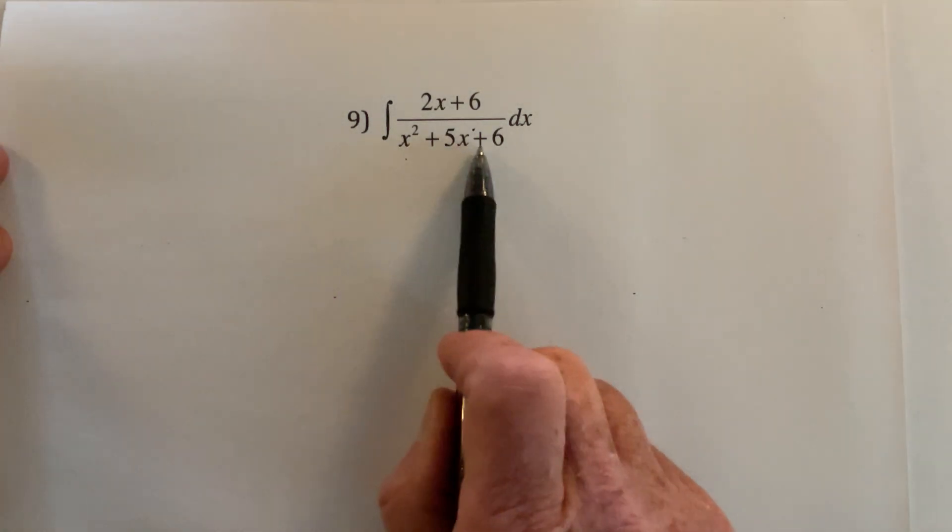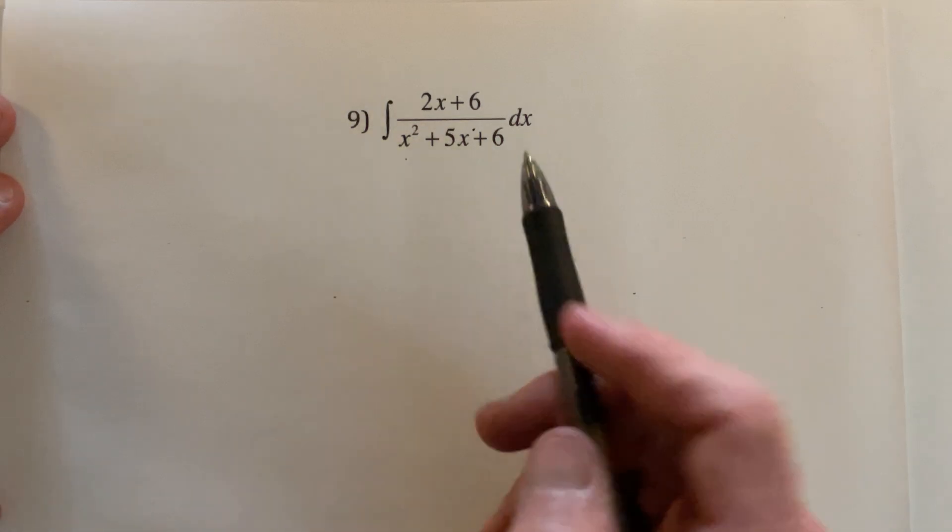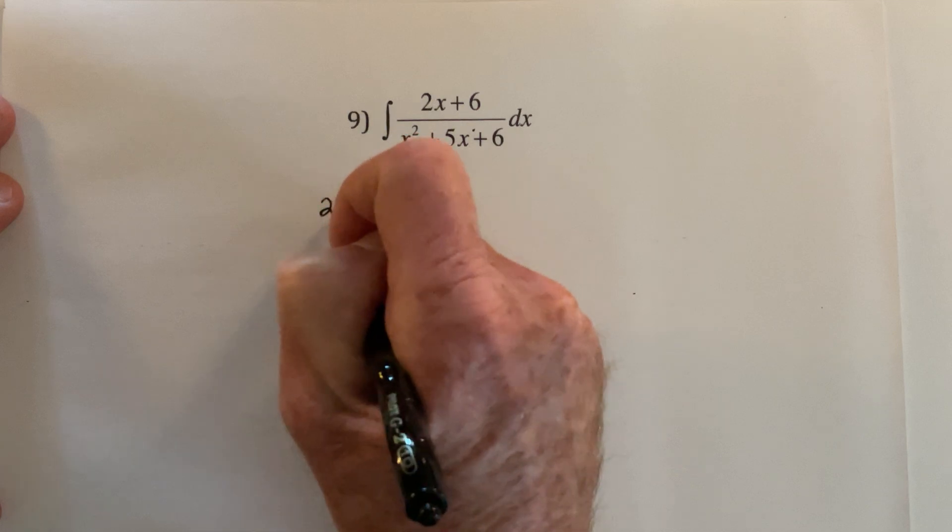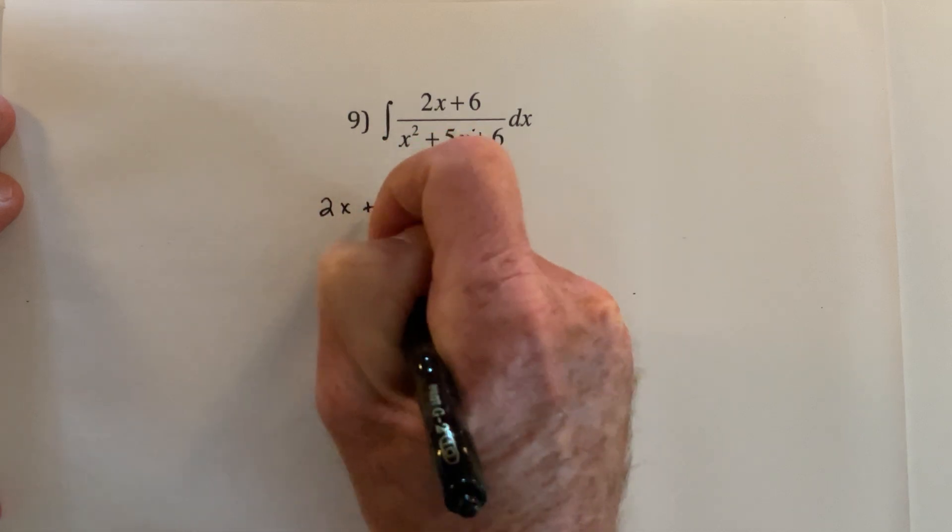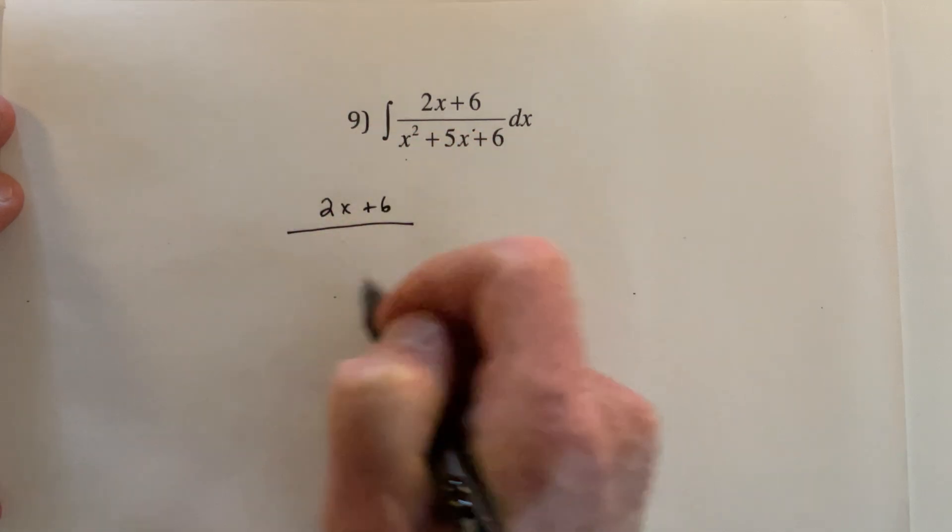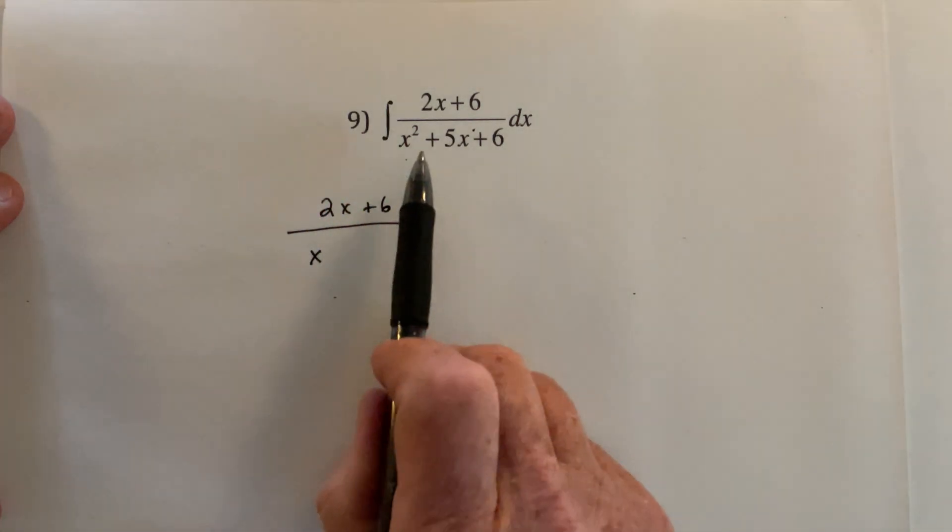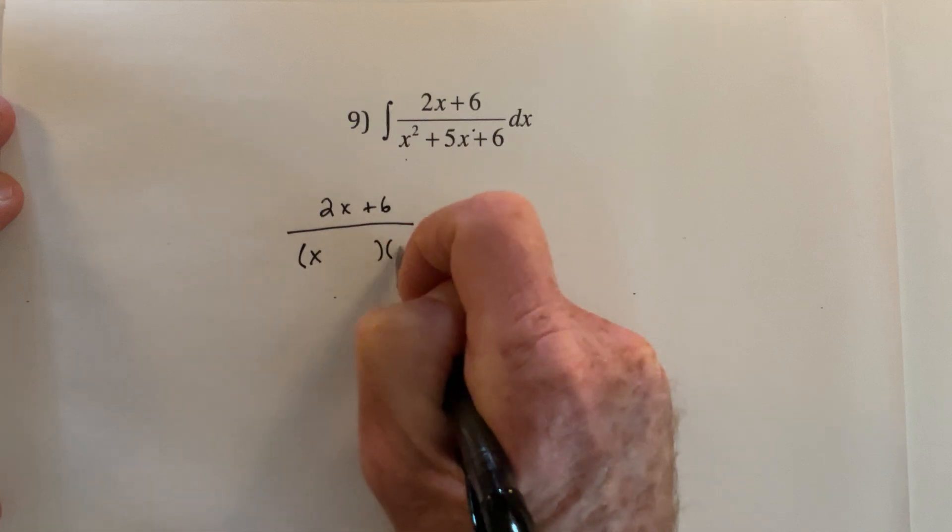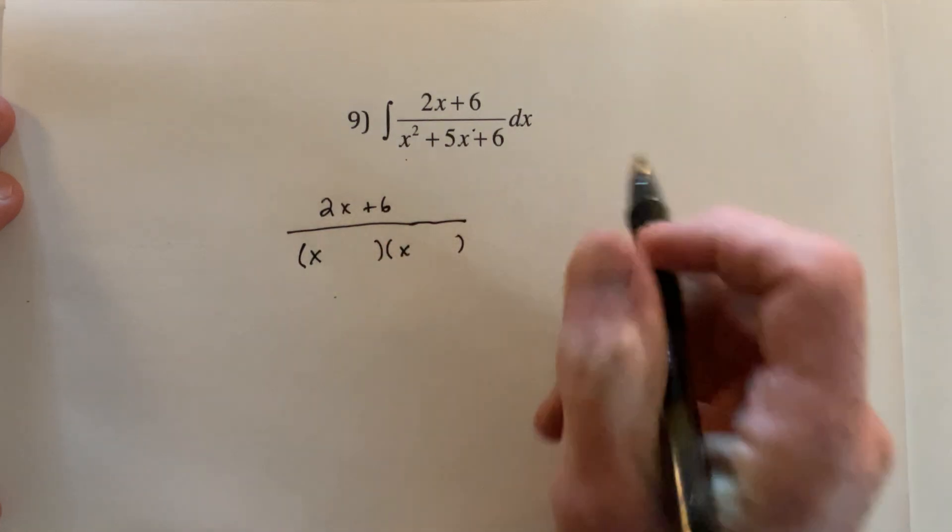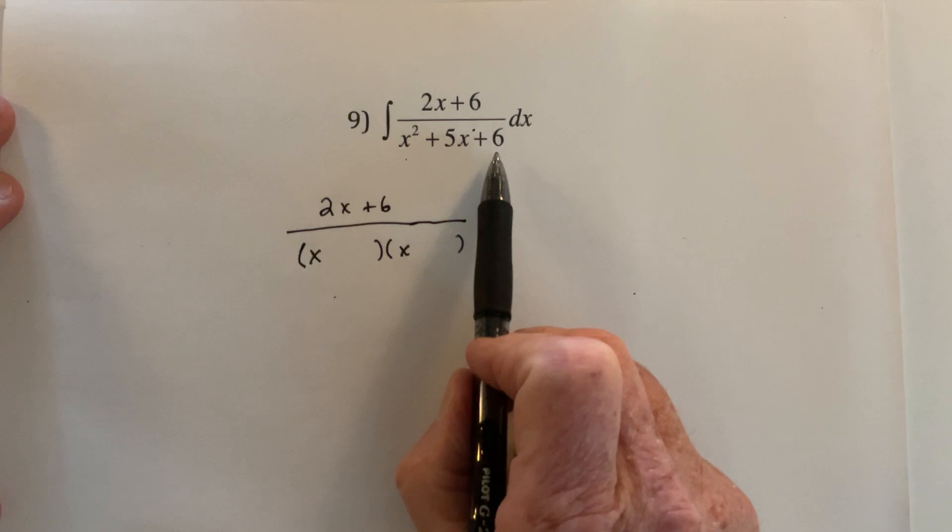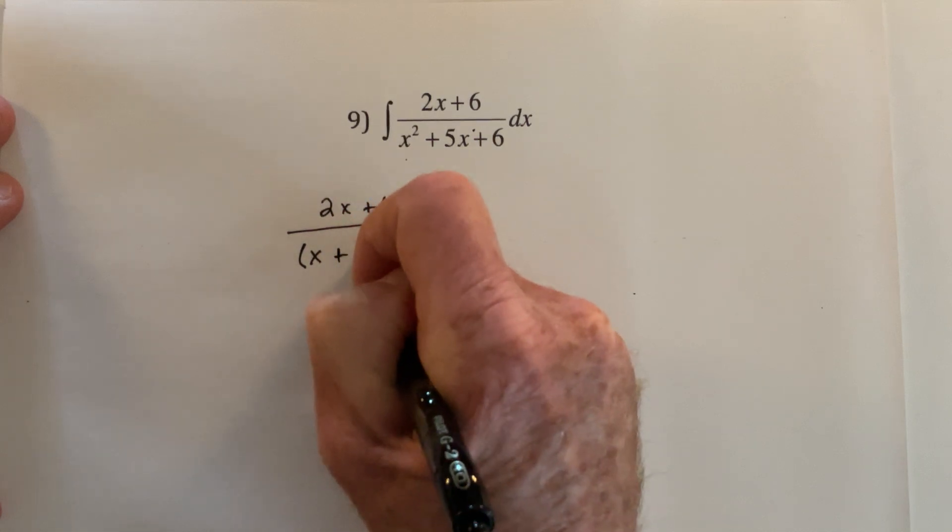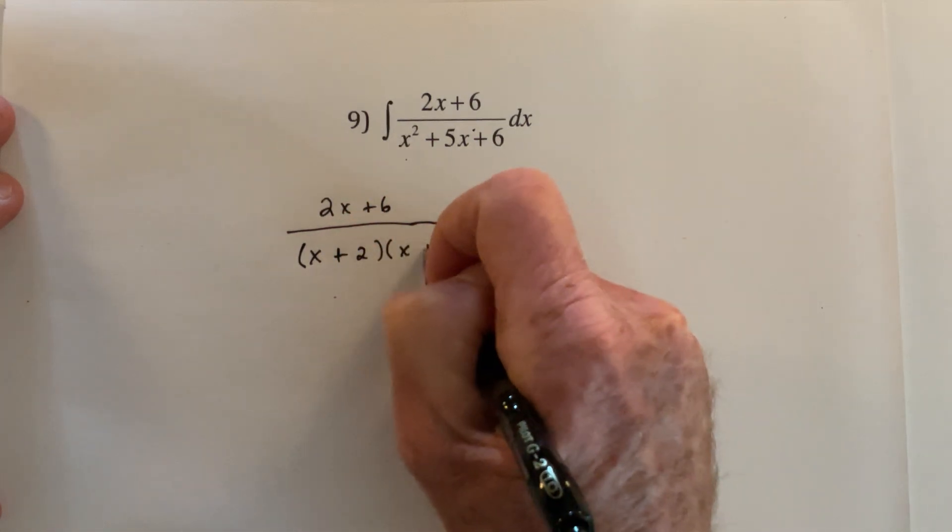The next thing to notice is that the bottom can be factored, and so what I do is first factor it. So I'm just going to do the algebra part right now, so I'm not going to write the integral symbol. And then, how could it be factored? So there would be an x times an x for the x squared, and then I need two things that will multiply to be a 6 and they also have to add up to 5. So I'm thinking that the candidates are going to be a 2 and a 3.